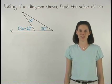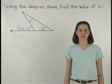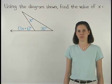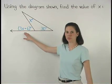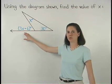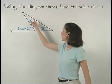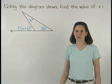To find the value of x in this problem, we use the exterior angle theorem, which states that the measure of the exterior angle of a triangle equals the sum of the measures of the remote interior angles.